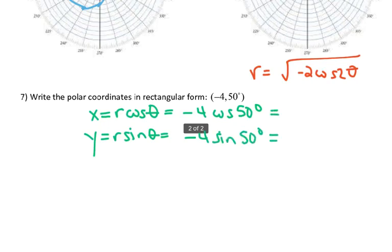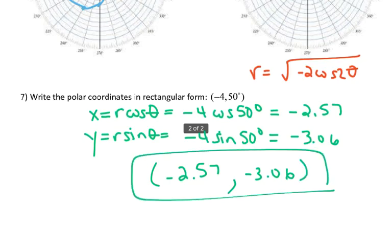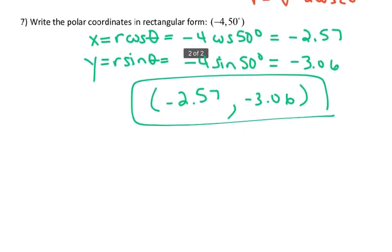And then I'm going to shove them in my calculator, and I'm going to get x to be about negative 2.57, and y is going to be negative 3.06. So the ordered pair negative 2.57 comma negative 3.06 is in the same location as negative 4, 50 degrees would be on the polar coordinate plane.